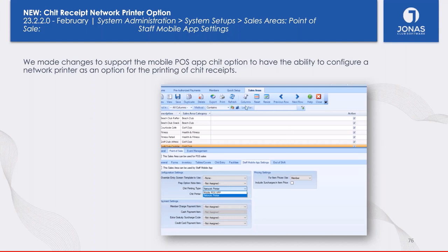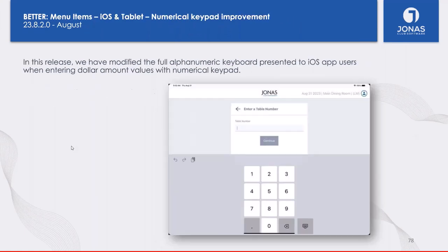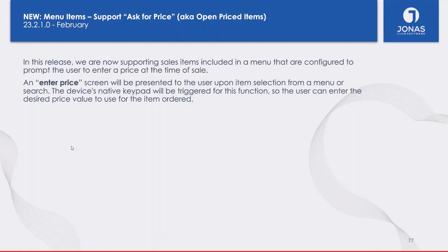Clubs can eliminate the need to purchase Bluetooth and wireless printers by leveraging existing network printers for Mobile POS receipt printing. We also added support for open price items in Mobile POS. For any sales item flagged with 'Ask for price when sold,' prior to this February change you would not get the prompt in Mobile POS to enter the price. Now items such as open food, open liquor, or a fish of the day that requires daily price entry are fully supported in the mobile app.